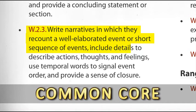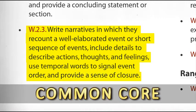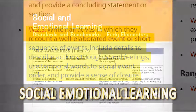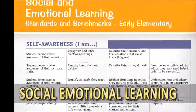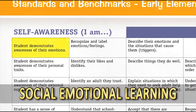The standard includes details to describe actions, thoughts, and feelings, use temporal words to signal event order, and provide a sense of closure. Now let's look at social-emotional learning — self-awareness: I am. Students demonstrate awareness of their emotions, recognize and label emotions and feelings, and describe their emotions and the situations that cause them.